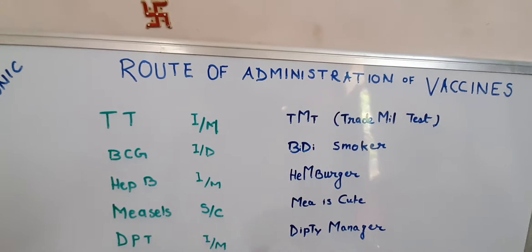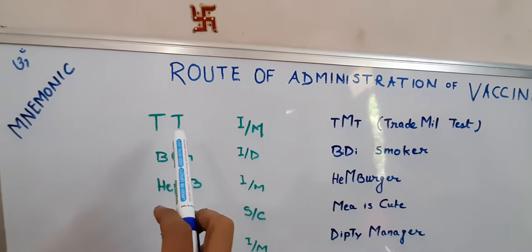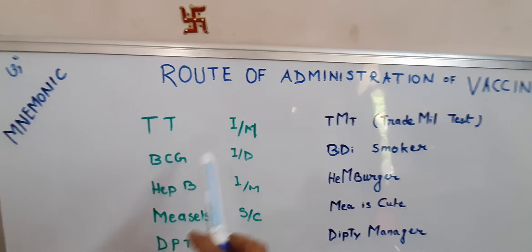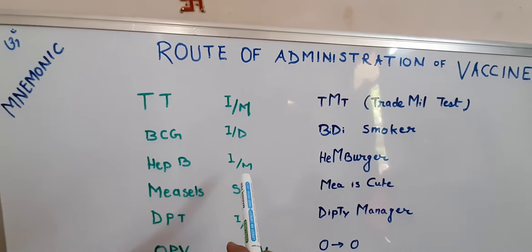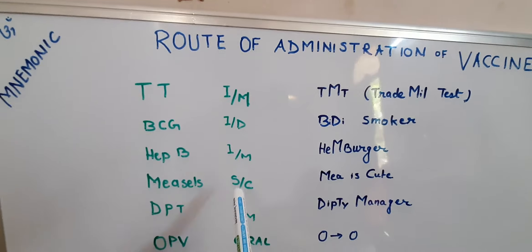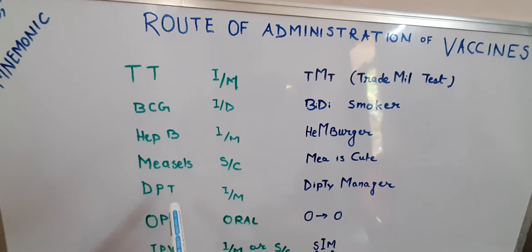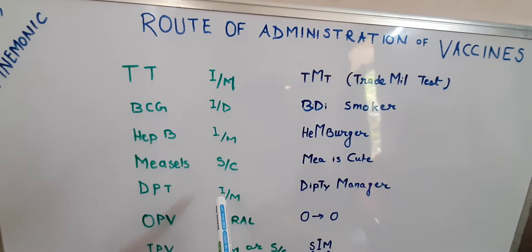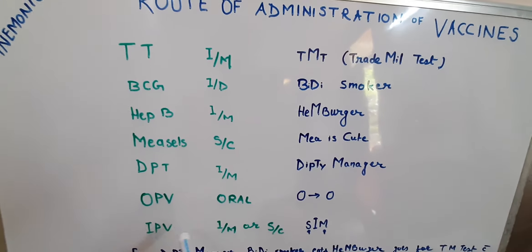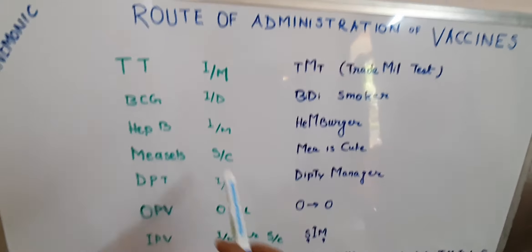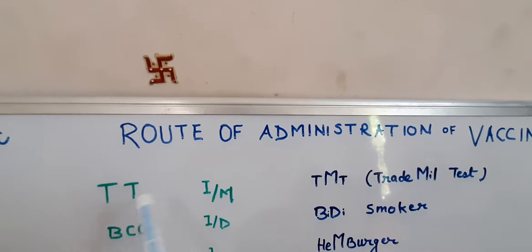First, Tetanus Toxoid (TT) which is given intramuscular. BCG is intradermal. Hepatitis B is intramuscular. Measles is subcutaneous. DPT — Diphtheria, Pertussis and Tetanus — is intramuscular. OPV is oral, and IPV is given intramuscular or subcutaneous.